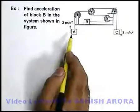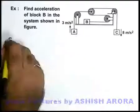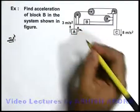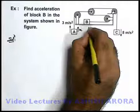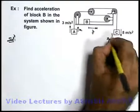Just to relate their acceleration, we first consider some displacements and try to relate their displacements. So in this situation, let's say this block A goes up by a distance x, B moves toward right by a distance y, and C comes down by a distance z.